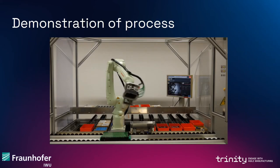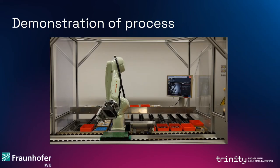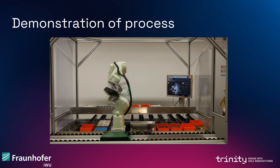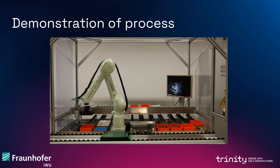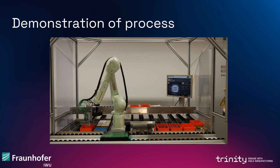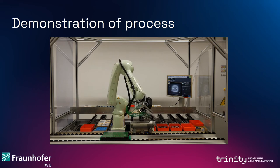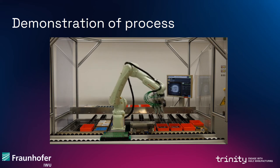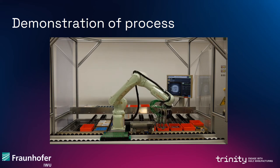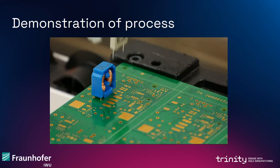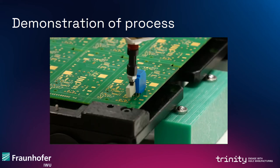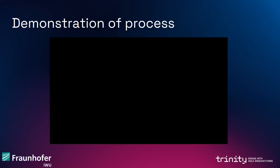Next up is a short excerpt of the process. You can see how the industrial robot mounts electronic components on the printed circuit boards. The industrial robot uses a vision system that is mounted onto the robot to detect the components in the container. The components are then placed in an intermediate storage, re-orientated, picked up again, and placed onto the printed circuit board.